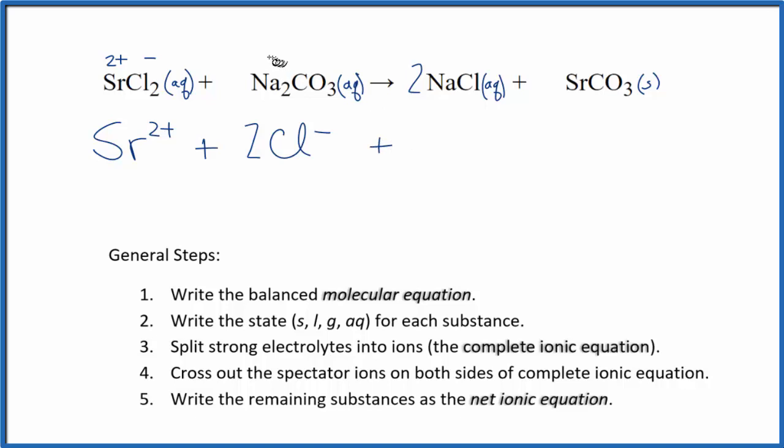Then we have sodium. That's in group 1, it has a plus charge, 1 plus. Carbonate is always 2 minus. That's one you should remember. So I have Na plus, the sodium ion. And subscript again tells me I have 2 of them. And then just the 1 carbonate ion, CO3 2 minus. Those are our reactants.